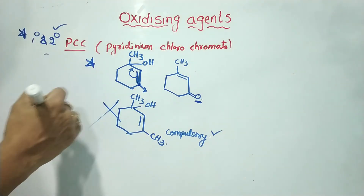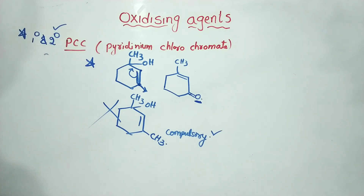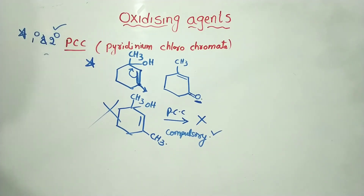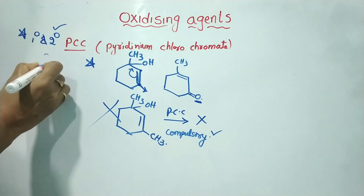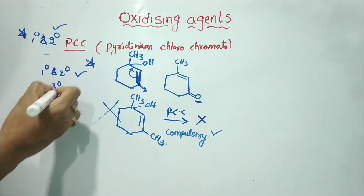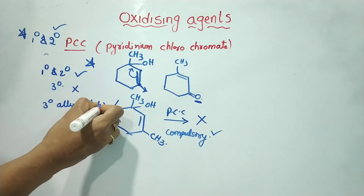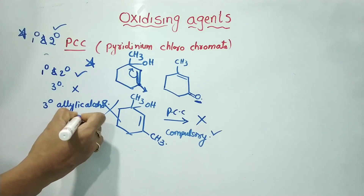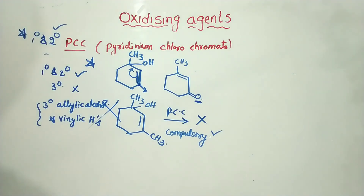This is an important point: in tertiary alcohols, there is no alpha hydrogen available for the mechanism, so PCC cannot do oxidation on tertiary alcohols. PCC is a mild oxidizing agent used for primary and secondary alcohols — giving aldehydes and ketones respectively — but not tertiary alcohols.